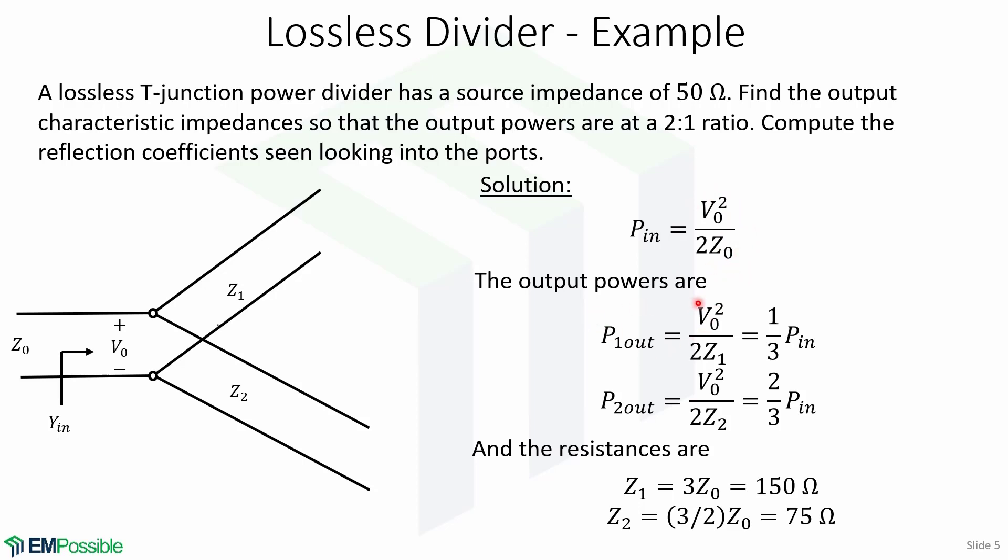Therefore, the output powers P1 out equals V0 squared over 2Z1, which is equal to 1 third of P in for the 2 to 1 ratio.